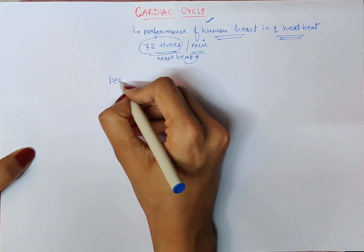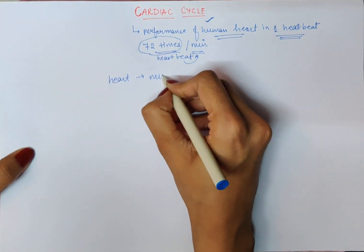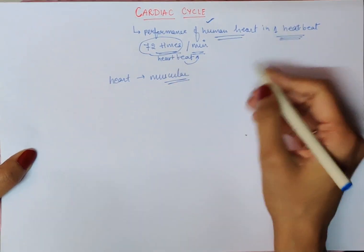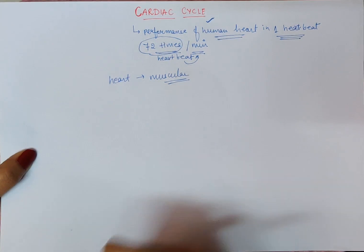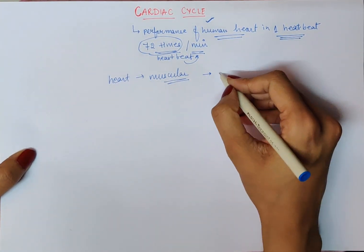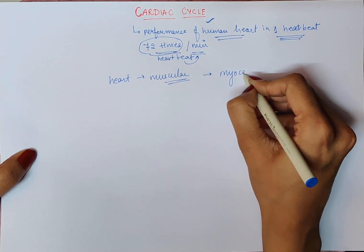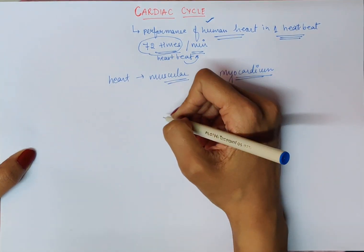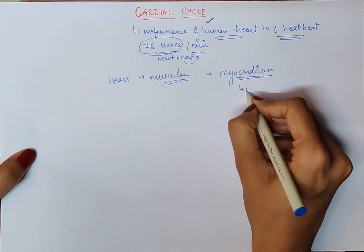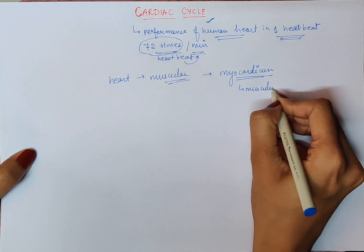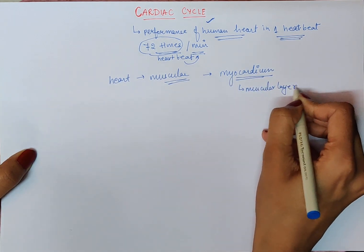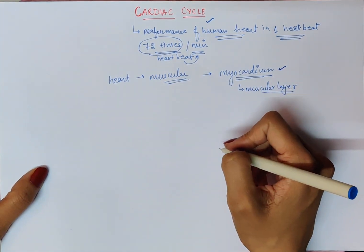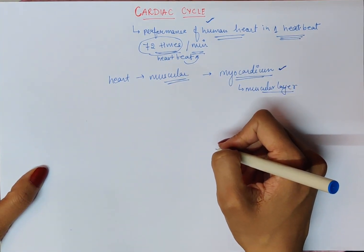Our heart is muscular in nature. Our heart contains a muscular layer known as myocardium. This myocardium plays a very important role in the cardiac cycle.